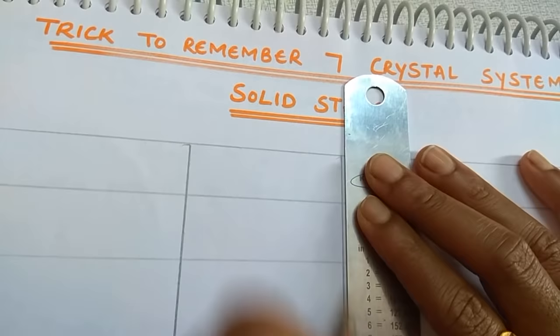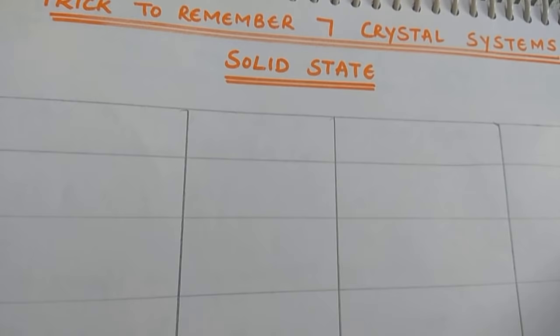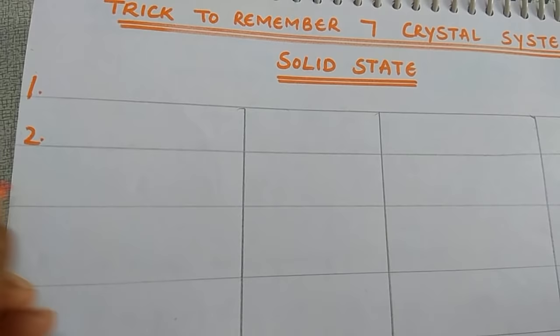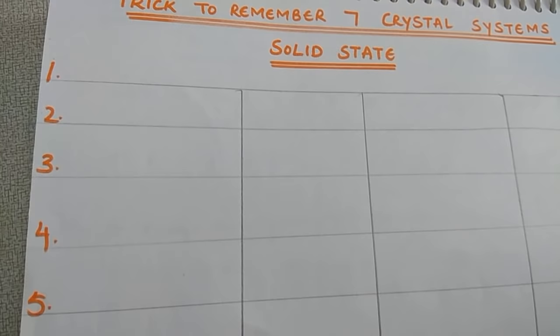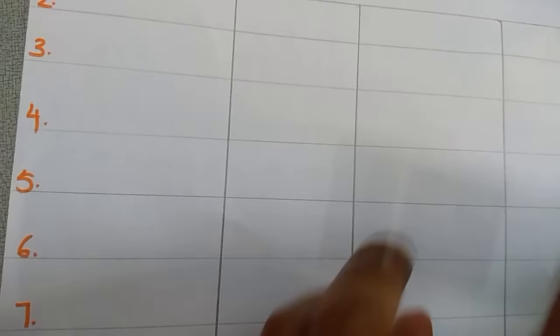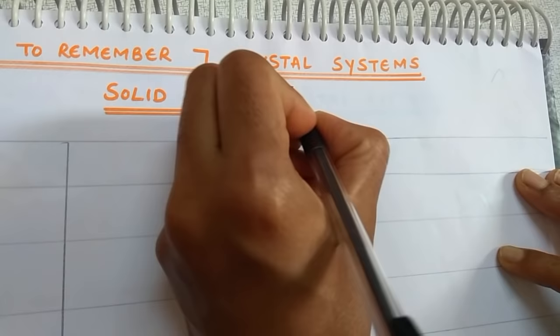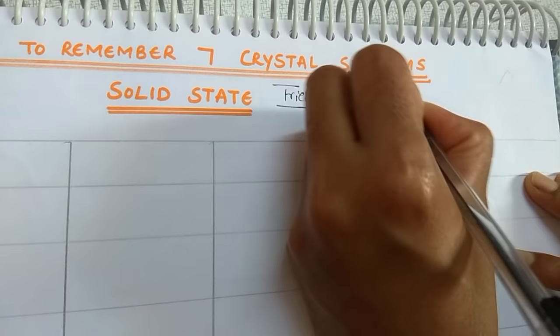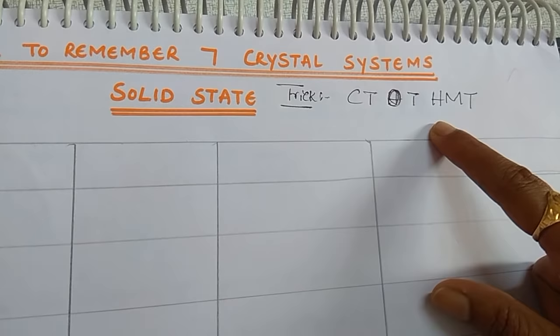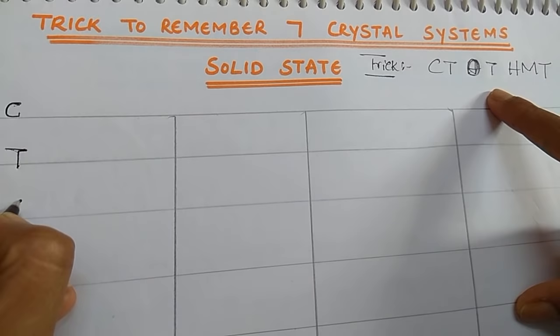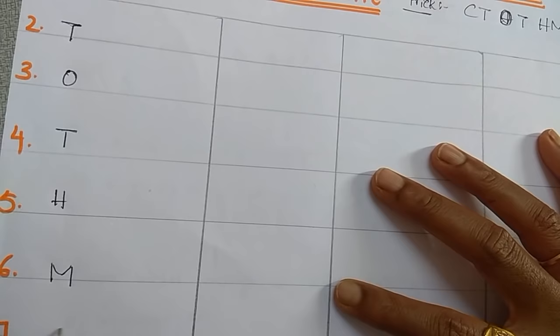Total there are seven crystal systems. The trick to remember them is: C, T, O, T, H, M, T. Remember this sequence — C-T-O-T-H-M-T — and your job will be easy.